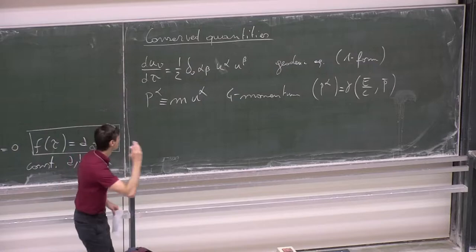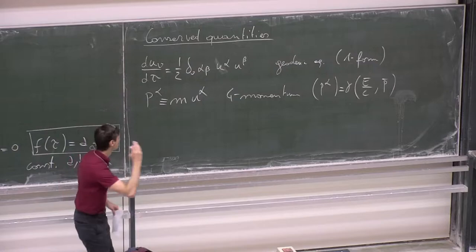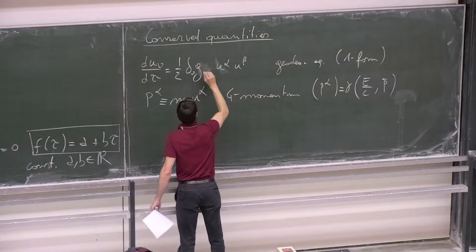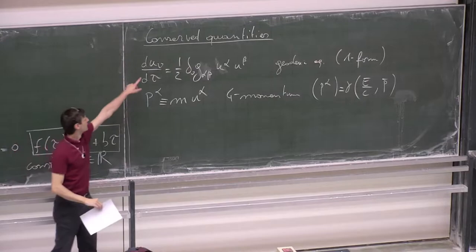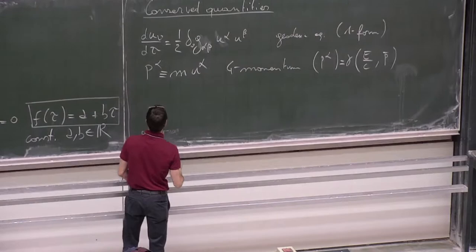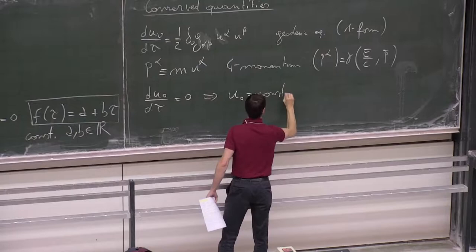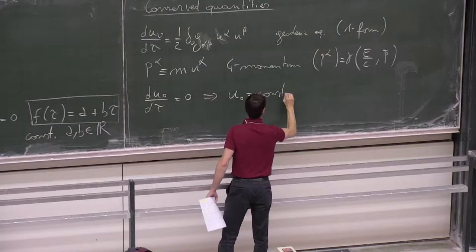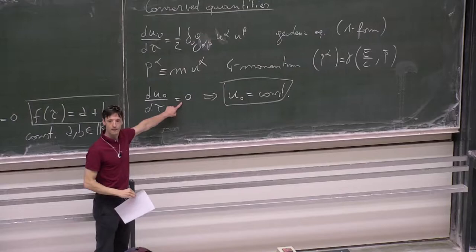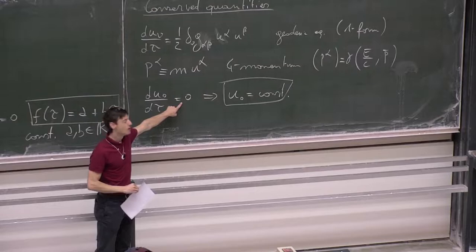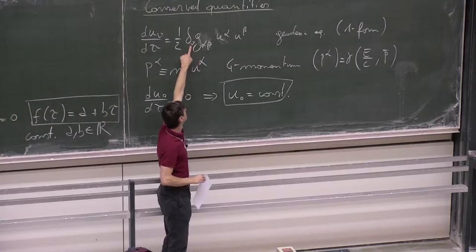The answer is straightforward — there is a g_{alpha beta} missing here. If we take, for example, the zero component, this can be associated to the energy. If this term is equal to zero, it means that u_0 is a constant — it is a conserved quantity. And when does this happen? When the derivative of the metric with respect to x^0 is equal to zero.